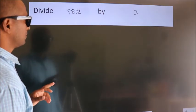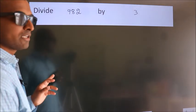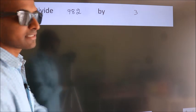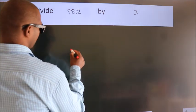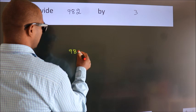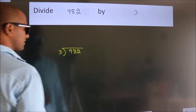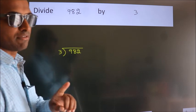Divide 982 by 3. To do this division, we should frame it in this way. 982 here, 3 here. This is your step 1.